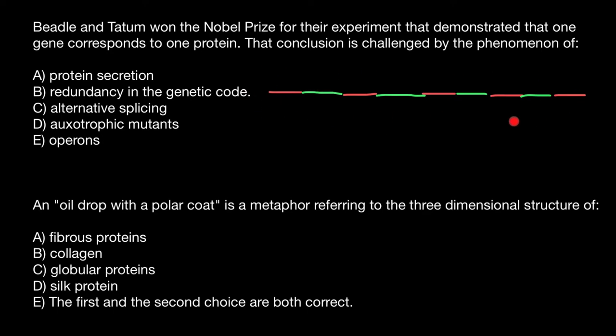Actually, one gene consists of multiple regions, which we call exons and introns. And we have about 23,000 genes, but we have about 100,000 proteins.